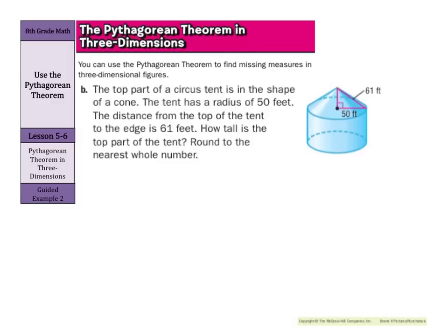Now, the top part of a circus tent is in the shape of a cone. The tent has a radius of 50 feet. The distance from the top of the tent to the edge is 61 feet. How tall is the top part of the tent? Round to the nearest whole number. Well, you can see our right triangle here, and I'm actually going to redraw this so we can see it just a little bit better on our screen. We have a right angle here, 50 feet there, 61 feet here, and we have an unknown side here.